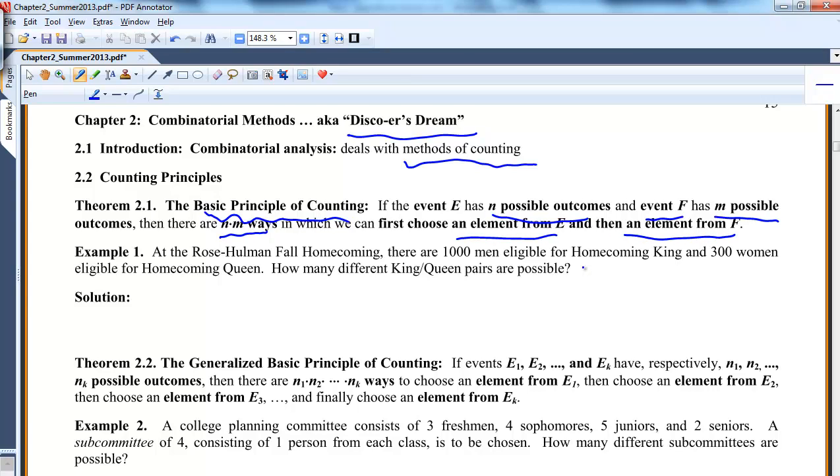In case that didn't make sense, let's do it in terms of something that would make better sense. Let's say for the fall homecoming, there are 1,000 guys that are eligible for homecoming king and 300 women for homecoming queen. How many different king-queen pairs could we have?